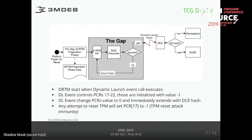This is a picture from the TCG DRTM architecture specification. What we see here is the platform boot flow. On the left side we have platform power-on. Then we go through the pre-gap stage. In case of Intel TXT, this is needed because it uses a closed binary from Intel ACM BIOS to pre-configure the environment for the further dynamic launch event. For AMD, this is not needed.